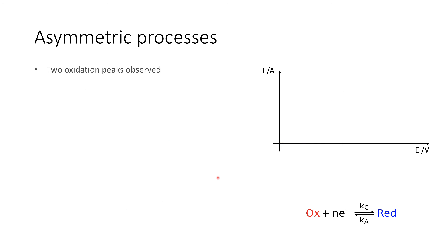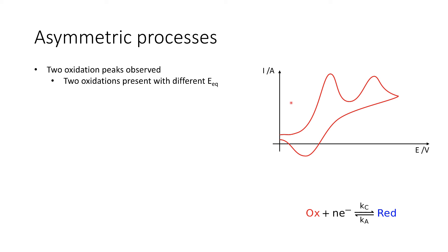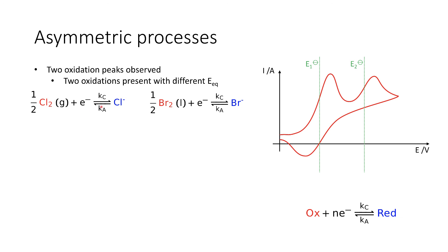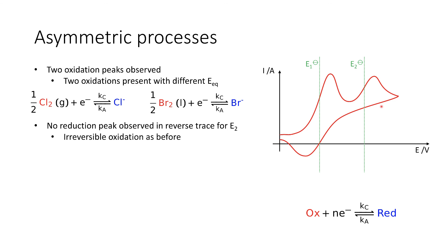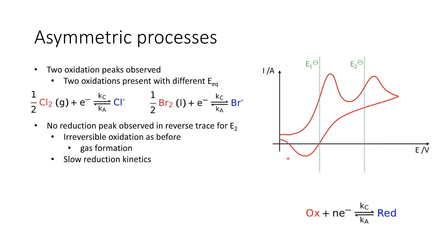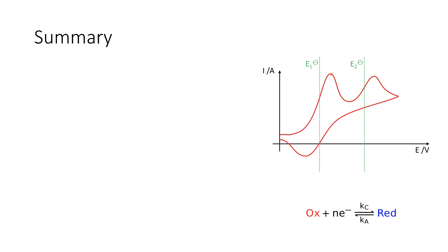Another form of asymmetric process is where we see two oxidation peaks. In this case we're seeing two oxidations with different equilibrium cell potentials — for example, chloride being oxidised to chlorine and bromide being oxidised to bromine in the same solution. We might see a reduction peak for cell 1 but not for cell 2, indicating an irreversible oxidation or slow reduction kinetics for cell 2. The reduction peak for E1 allows us to determine a cell potential for E1 and identify what's happening in that cell, confirming a reversible process.